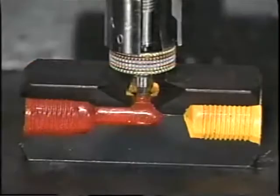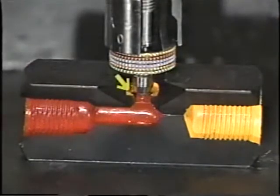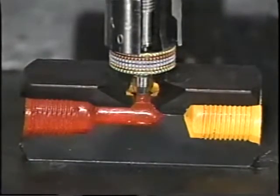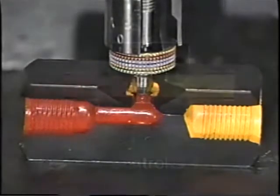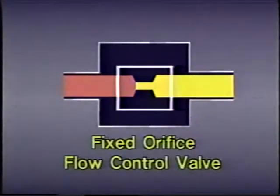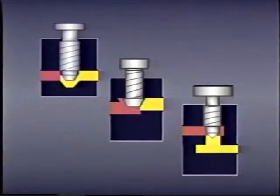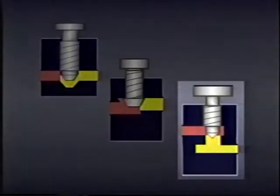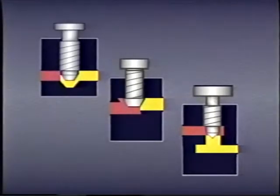The orifice is the restriction in the cross-sectional area in the flow control valve. The larger the orifice, the more fluid can flow through it. In some flow control valves, the size of the orifice is fixed and cannot be changed. However, many systems require that the size of the orifice be adjustable. Gate valves, globe valves, and needle valves are all examples of variable orifices.